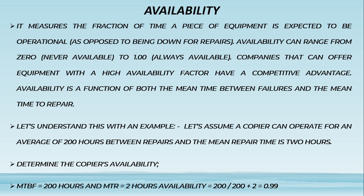Availability is a function of both the mean time between failures (MTBF) and the mean time to repair (MTTR). Example: A copier can operate for an average of 200 hours between repairs, and the mean repair time is 2 hours. Availability = MTBF / (MTBF + MTTR) = 200 / (200 + 2) = 0.99.